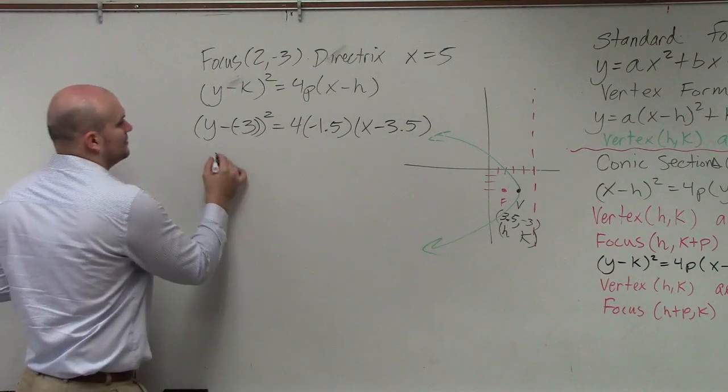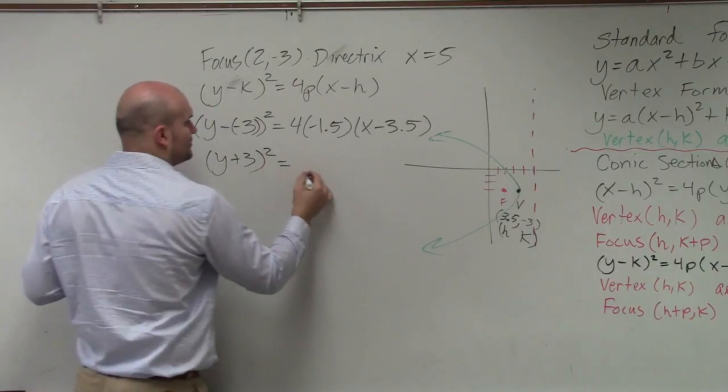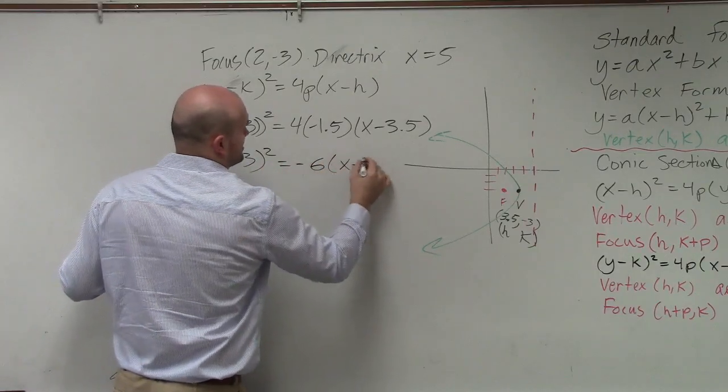So now we just simplify. y plus 3 squared equals negative 6 times x minus 3.5.